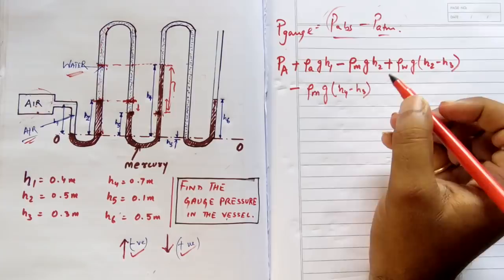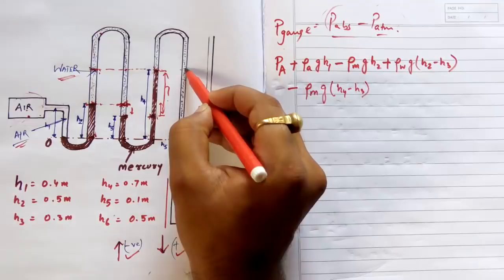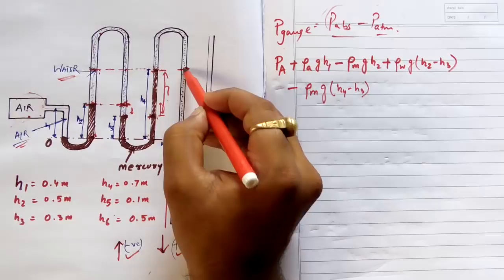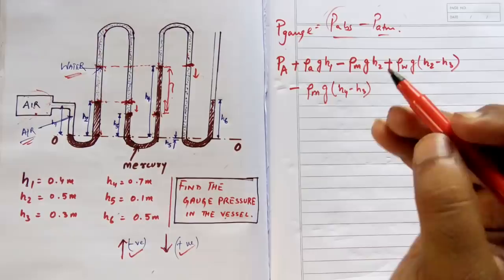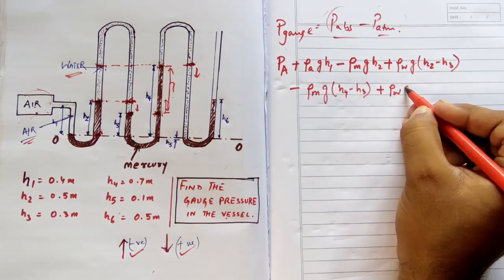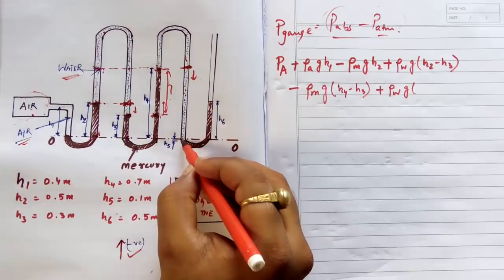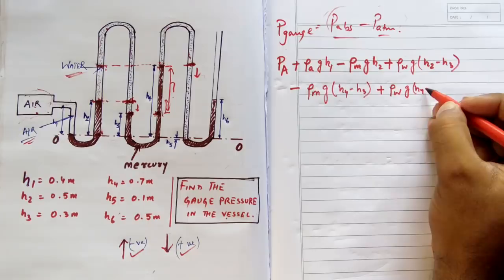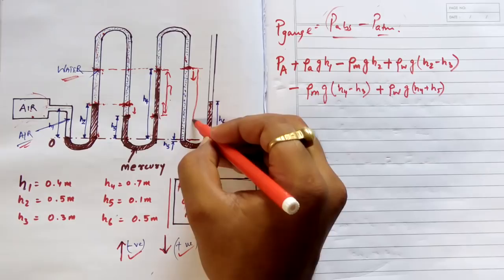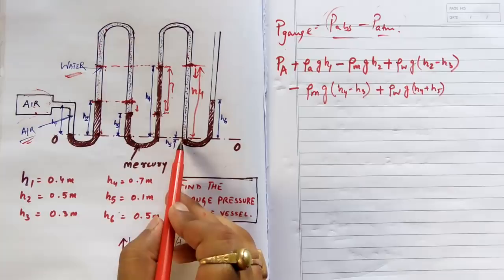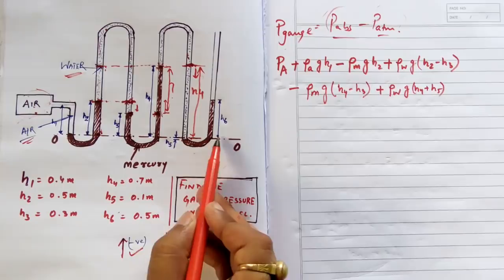Now I can directly jump from this point to the next because these two points are at the same level and in the expanse of the same fluid, which is water. Now I am at the next point and I will come downward — positive sign. The fluid is water, rho_W times G, and the height is H4 plus H5, because water also extends below the datum line by H5.